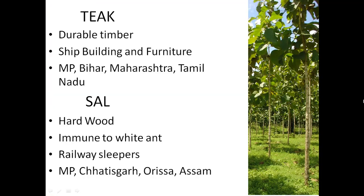Now we will see the species of trees found in tropical deciduous forest. Teak is economically very important and in high demand due to its durable timber. It is used for making expensive furniture and for shipbuilding. It is mainly found in Madhya Pradesh, Bihar, Maharashtra, and Tamil Nadu. Saal is another important species found in tropical deciduous forest — it is a hardwood that is immune to termites and is used for making railway sleepers. It is primarily found in MP, Chhattisgarh, Orissa, and Assam.